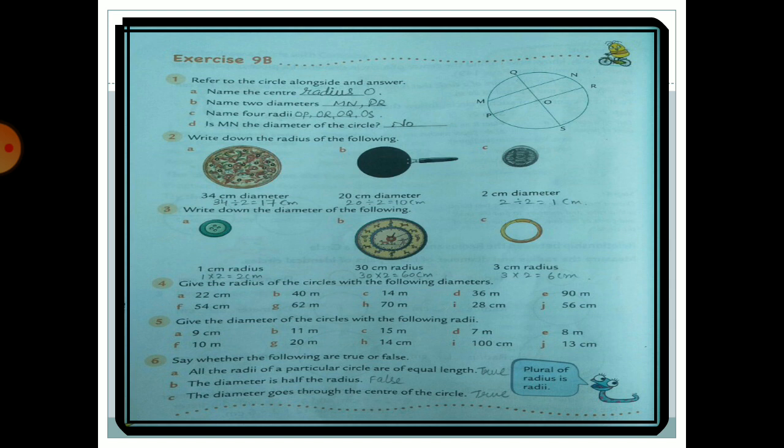Question 2: Write down the radius of the following. A pizza has a diameter of 34 cm, so radius equals 34 divided by 2 equals 17 cm. A pen has a diameter of 20 cm, so radius equals 20 divided by 2 equals 10 cm. A 5-rupee coin has a diameter of 2 cm, so radius equals 2 divided by 2 equals 1 cm.